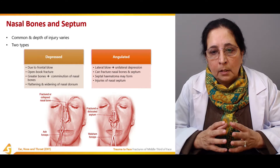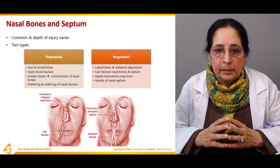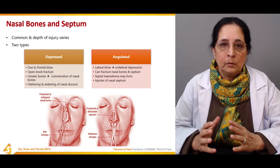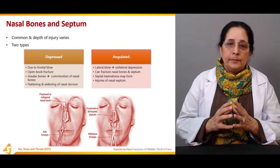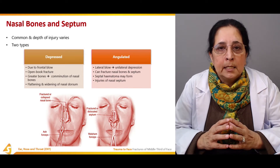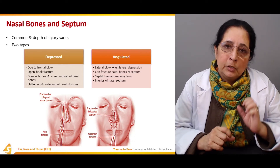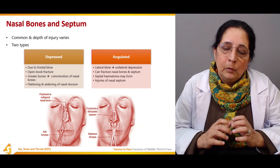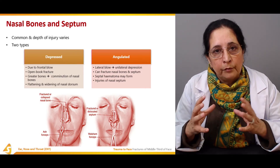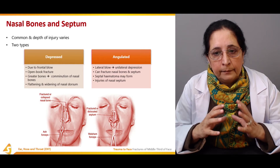The blow can also cause injury to the nasal septum in addition to the nasal bone. To summarize, there are two types of fractures: the depressed fracture, due to a frontal blow, and the angulated fracture, due to a blow from the side of the nose.